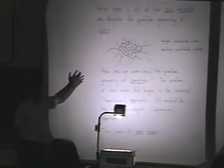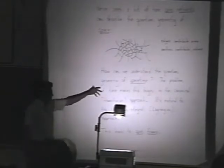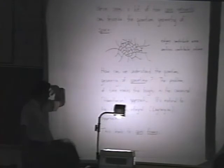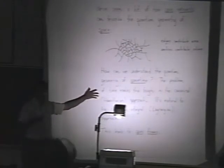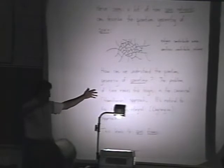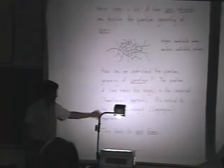The Hamiltonian approach is when you study a physical system by studying what's going on at a given time — emphasizing that — whereas the path integral or Lagrangian approach means you're studying things in spacetime right from the very start.